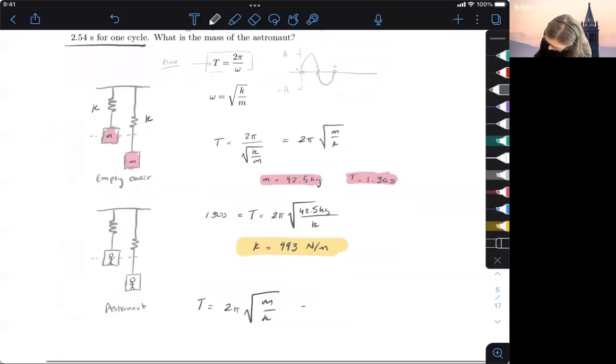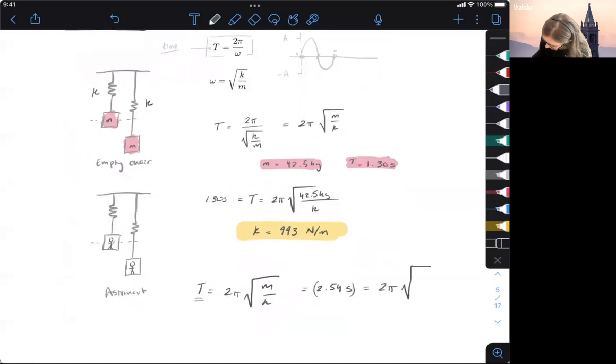we also have the time for one cycle, so the period here. We're going to do 2.54 seconds, plugging that in for T. And then we're going to set that equal to 2π times the square root of the mass of the person divided by the spring constant that we just found.